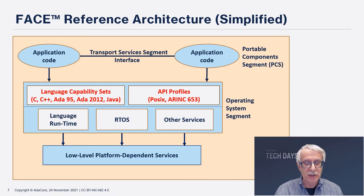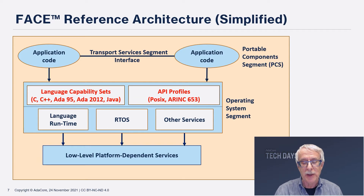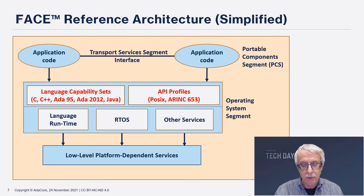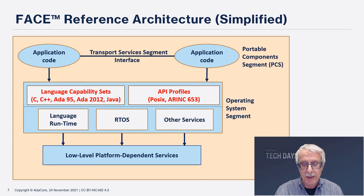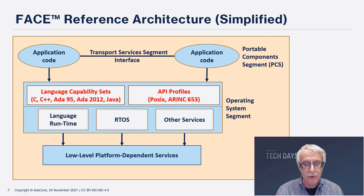Here is a simplified picture to set the stage. You can find a more comprehensive diagram in the FACE technical standard. In this layered architecture, the application code — the components with the business logic — sits at the top. FACE refers to the layers as segments, so this top layer is called, not surprisingly, the Portable Component Segment, or PCS.